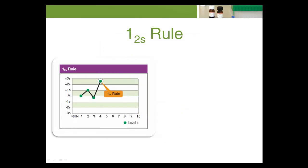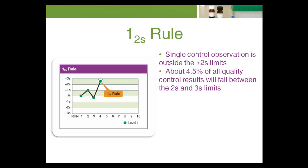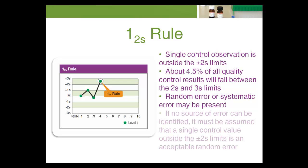The 1-2s rule is a warning rule that's violated when a single control observation is outside the positive-negative 2s limits. Remember that in the absence of added analytical error, about 4.5% of all quality control results will fall between the 2s and 3s limits. This rule merely warns that random error or systematic error may be present in the test system. The relationship between this value and other control results within the current and previous analytical runs must be examined. If no relationship can be found and no source of error can be identified, it must be assumed that a single control value outside the positive-negative 2s limits is an acceptable random error. Patient results can be reported.